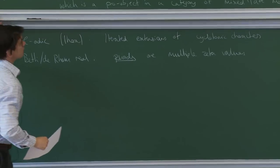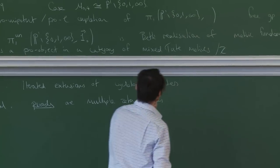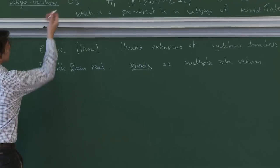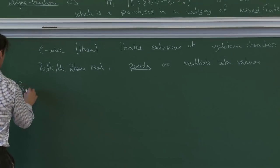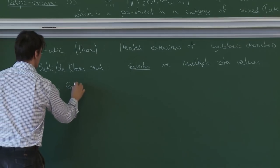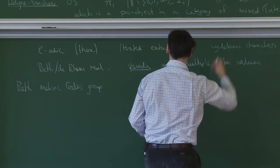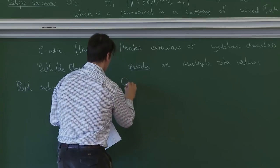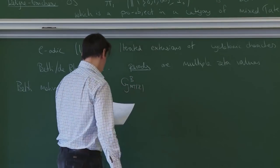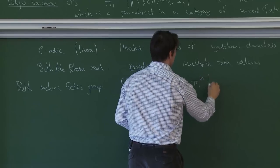So what's the analogue of the absolute Galois group acting on the pro-finite completion? Instead of the absolute Galois group, we have something called the motivic Galois group — the fundamental group of this category — which acts on this unipotent completion.